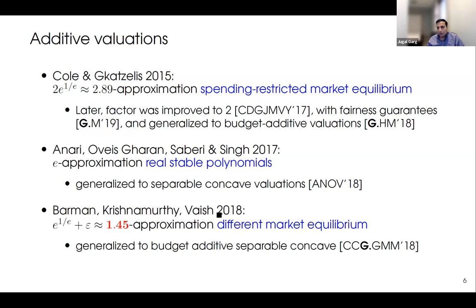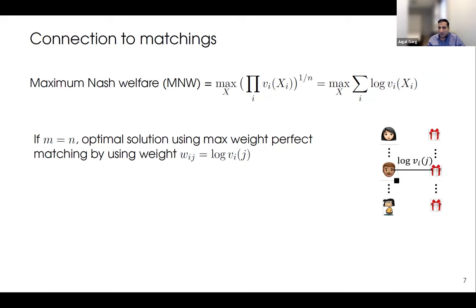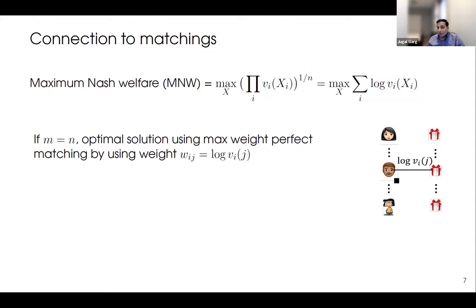For more general valuations like gross substitutes, submodular, and subadditive, these techniques unfortunately do not extend. We need to develop new techniques. One key observation: if the number of goods equals the number of agents — m equals n — then to maximize the Nash welfare product, we need to give at least one good to every agent (otherwise the product is zero due to normalization). So when m equals n, everyone gets exactly one good, and this is exactly a maximum weight perfect matching problem, which we can solve efficiently.